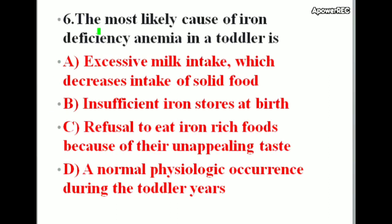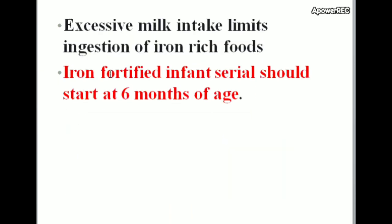Next question: The most likely cause of iron deficiency anemia in a toddler is — options: excessive milk intake which decreases intake of solid food, insufficient iron stores at birth, refusal to eat iron-rich foods because of their unappealing taste, a normal physiologic occurrence during the toddler years. Correct answer is excessive milk intake which decreases intake of solid food. Excessive milk intake limits ingestion of iron-rich foods.